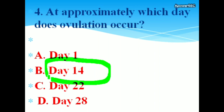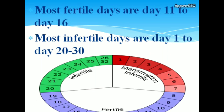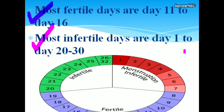Ovulation occurs on approximately the 14th day. The most fertile days are day 11 to day 16. The most infertile days are day 1 to 7 and day 20 to 30.